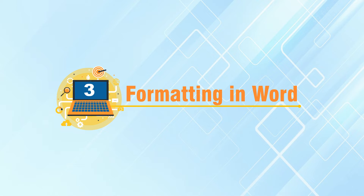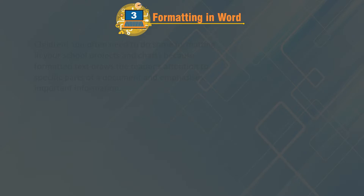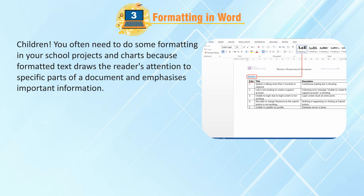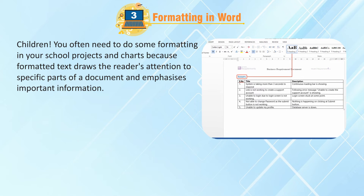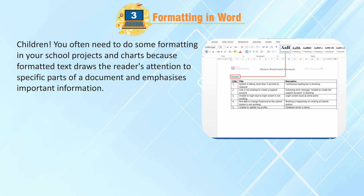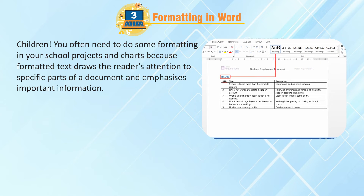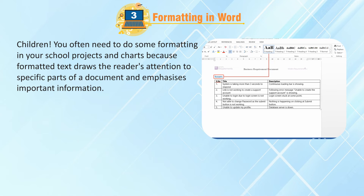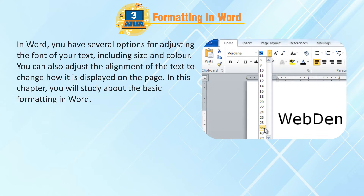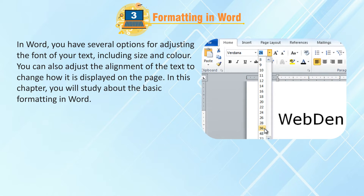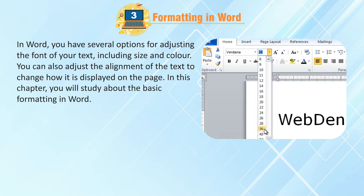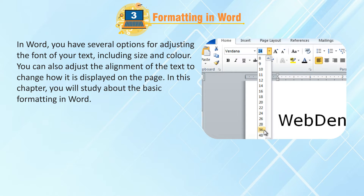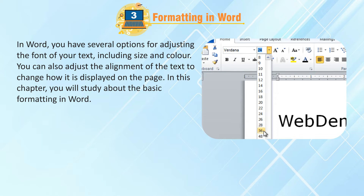Chapter 3: Formatting in Word. Children, you often need to do some formatting in your school projects and charts because formatted text draws the reader's attention to specific parts of a document and emphasizes important information. In Word, you have several options for adjusting the font of your text including size and color. You can also adjust the alignment of the text to change how it is displayed on the page. In this chapter, you will study about the basic formatting in Word.